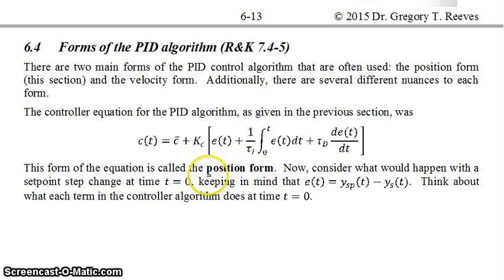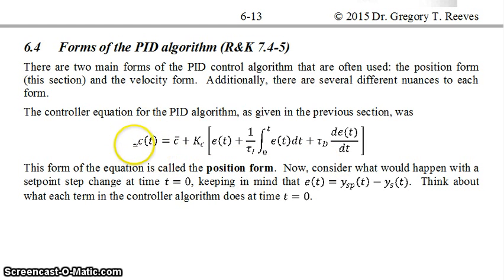This form of the equation is called the position form. It's called the position form because at time t you are given the position of the controller, or the actual controller signal at time t.